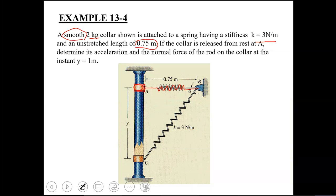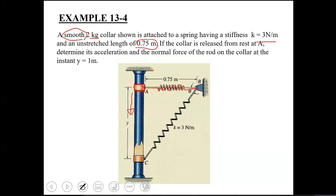The collar is released from rest at A. Once released, due to the weight of the collar (2 kg mass), it is going to move downward. You need to find the acceleration as well as the normal force which the rod exerts on the collar at the instant when it has traveled a distance of y equal to 1 meter.